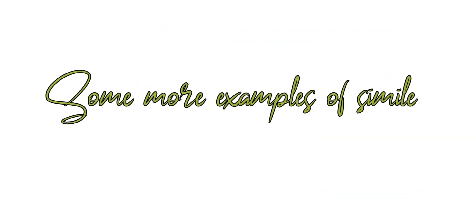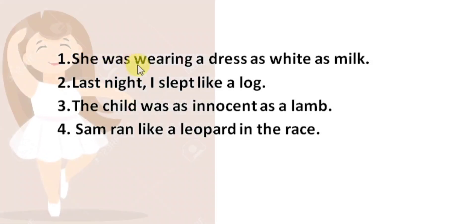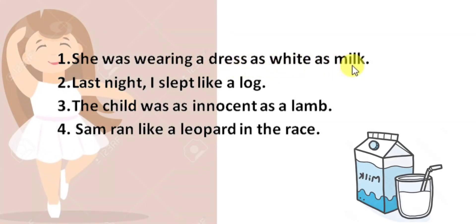Let's see some more examples of simile. 'She was wearing a dress as white as milk.' Here, the dress worn by the girl is compared to milk because of its color. Milk is white, and just as milk, the dress is also impeccably white.